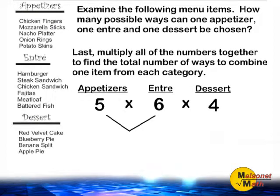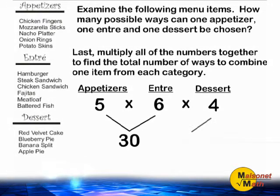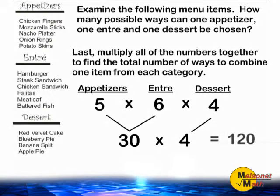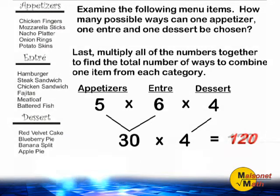In this case, we are going to multiply five times six, which is thirty, and thirty times four, which is equal to one hundred and twenty. So there are one hundred and twenty ways to combine one item from each category.